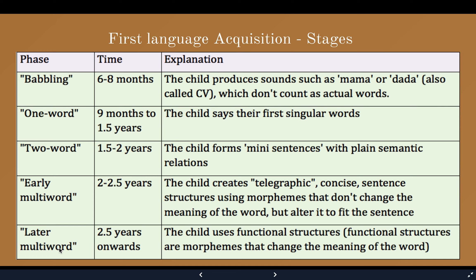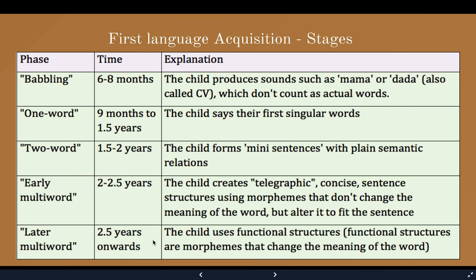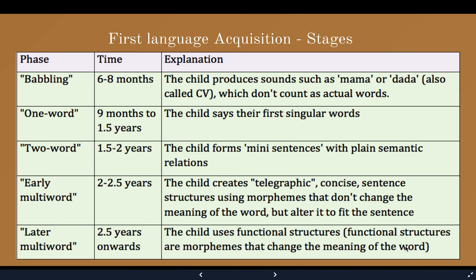Then comes the later multi-word stage, from 2.5 years onwards. At this stage they use functional structures. Functional structures are morphemes that change the meaning of words. We have already covered morphemes in previous content. This is the normal first language acquisition progression.